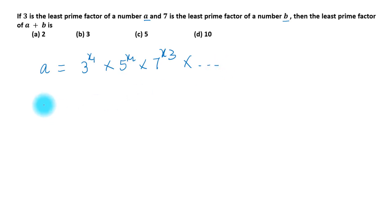b ka sab se least prime factor is 7, isliye aap isse equal to b is equal to 7 to the y1 times 11 to the y2 times 13 to the y3 and so on.